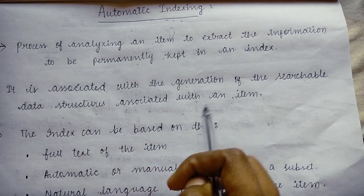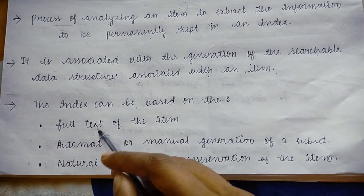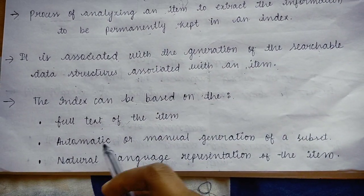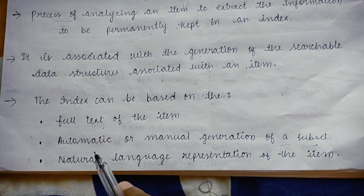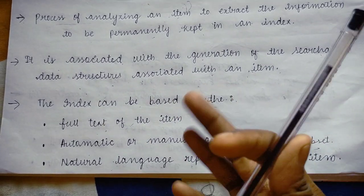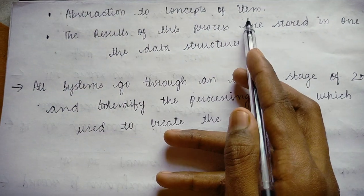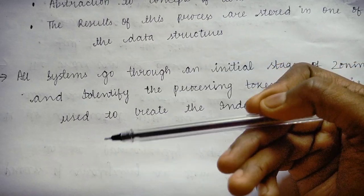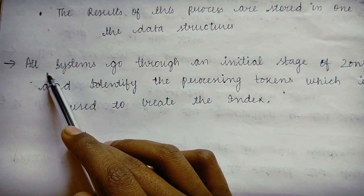The index — basically the searchable or stored items — can be based on the full text of the item, meaning only if you enter the full text of the item will you get it in the searchable box. Next is automatic or manual generation of a natural language representation of the item. The system can only understand natural language representation. Next is abstraction to concepts of the item, and then the results of this process are stored in one of the data structures.